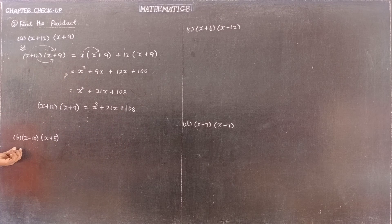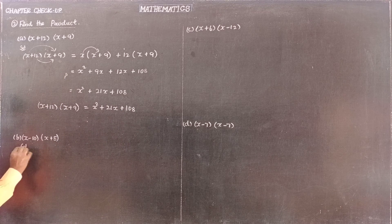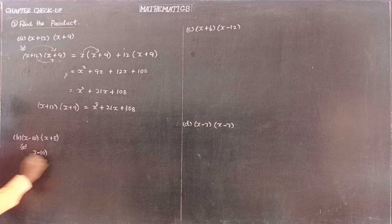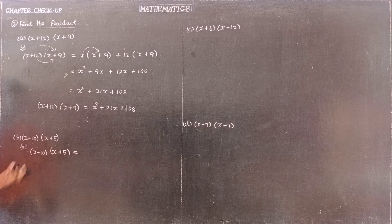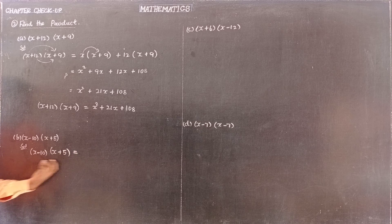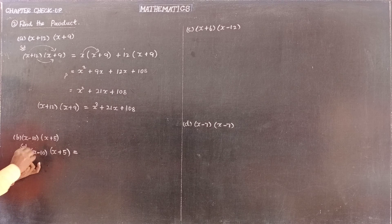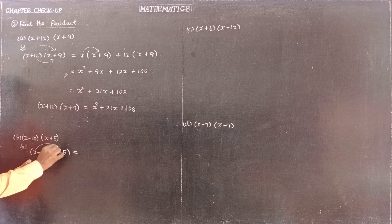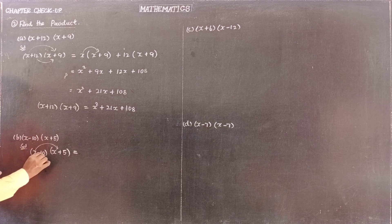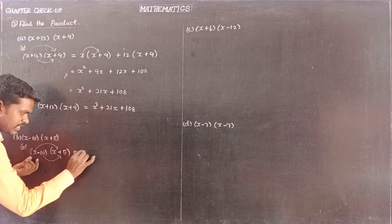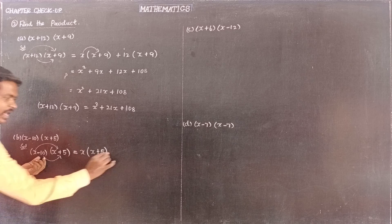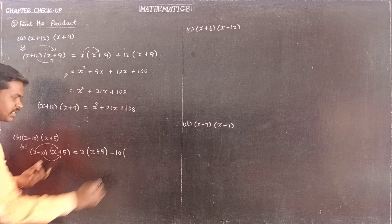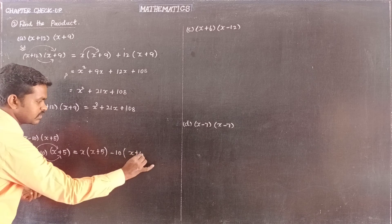Next, subdivision B: x minus 10 into x plus 5. We have two factors to multiply. First, multiply x by the second expression x plus 5; then multiply minus 10 by the second expression x plus 5.